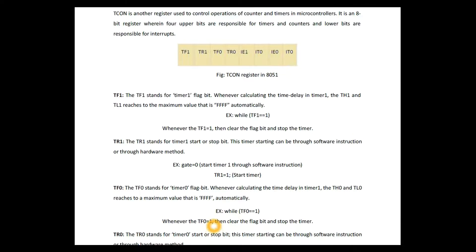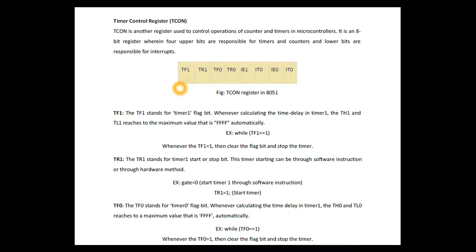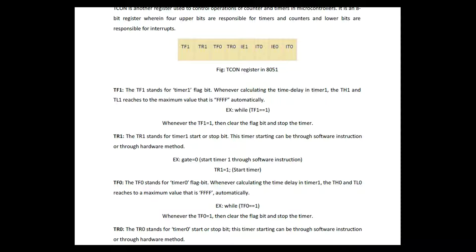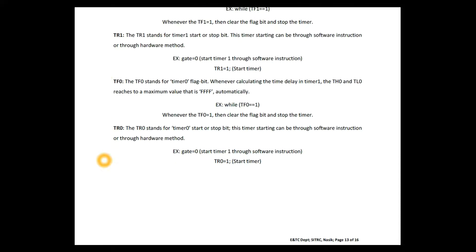The TCON register consists of 8 bits shared between Timer 0 and Timer 1. The TF flag bit is the timer overflow flag — it sets when the timer reaches FFH. The TR bit is the run bit used to start and stop a particular timer. To start or stop Timer 0 or Timer 1, we set or clear the TR with the corresponding timer number.